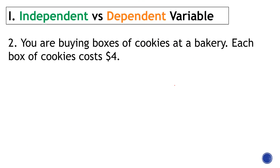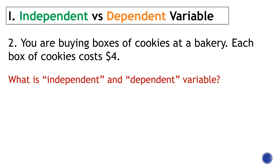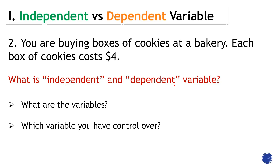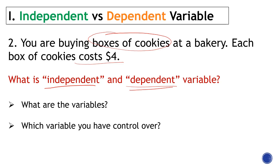You are buying boxes of cookies at a bakery, and each box costs $4. You can control the number of boxes of cookies that you will buy — that is our independent variable. The total amount you spend is the dependent variable.